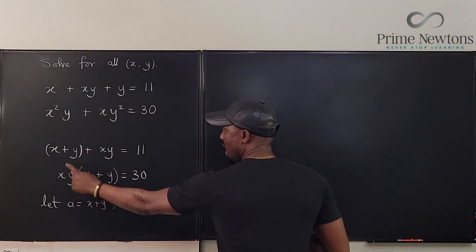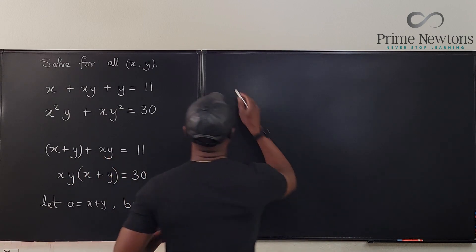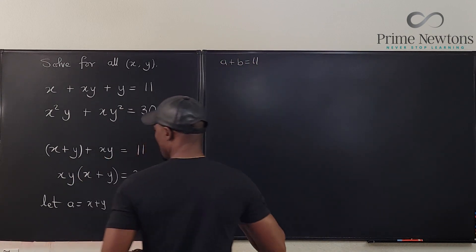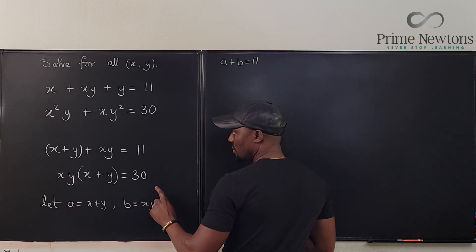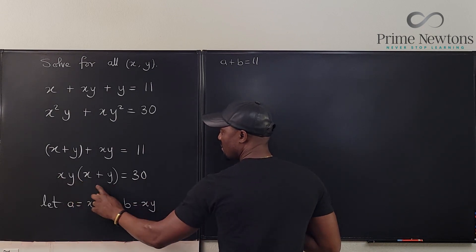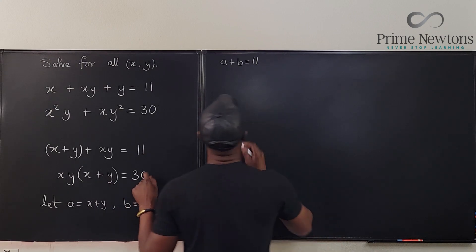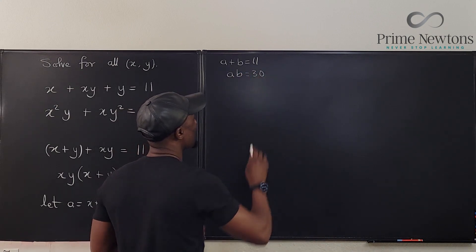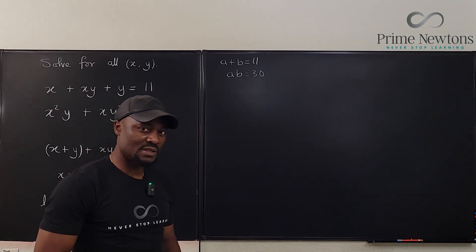So now the first one becomes a plus b equals 11, and we have ab equals, what's that? b times a will be equal to 30. So we have ab equals 30. The question is, can you solve this?